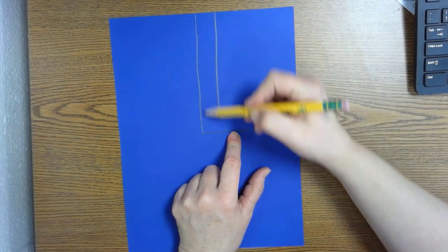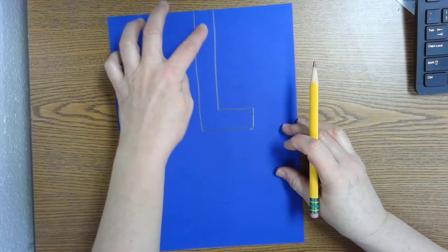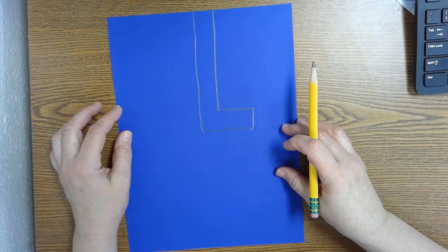So these perpendicular lines and horizontal lines. You should have what looks like a big block L in the middle.